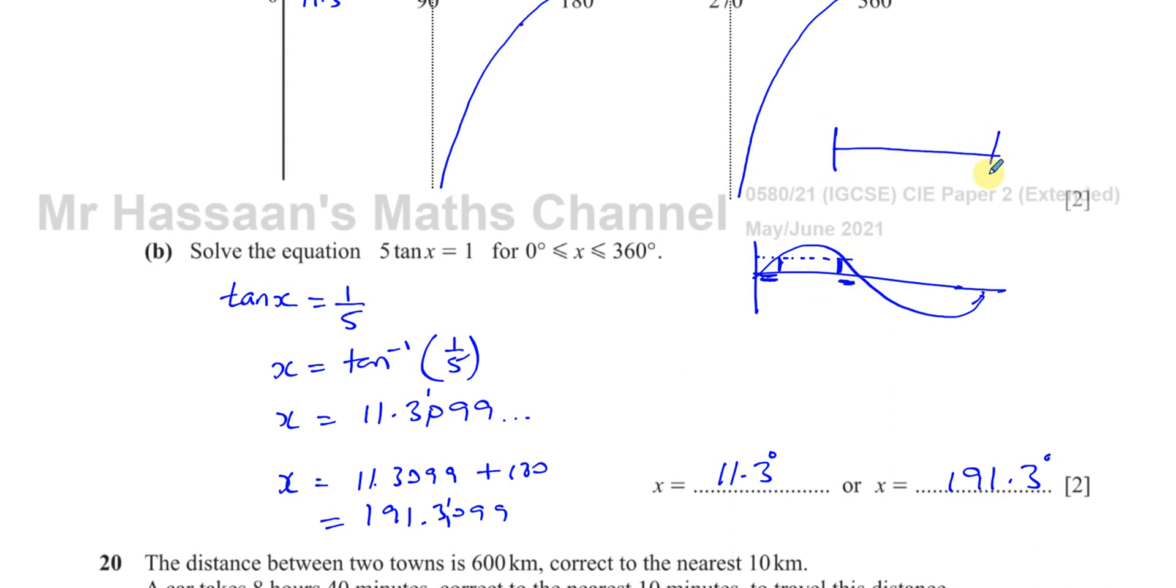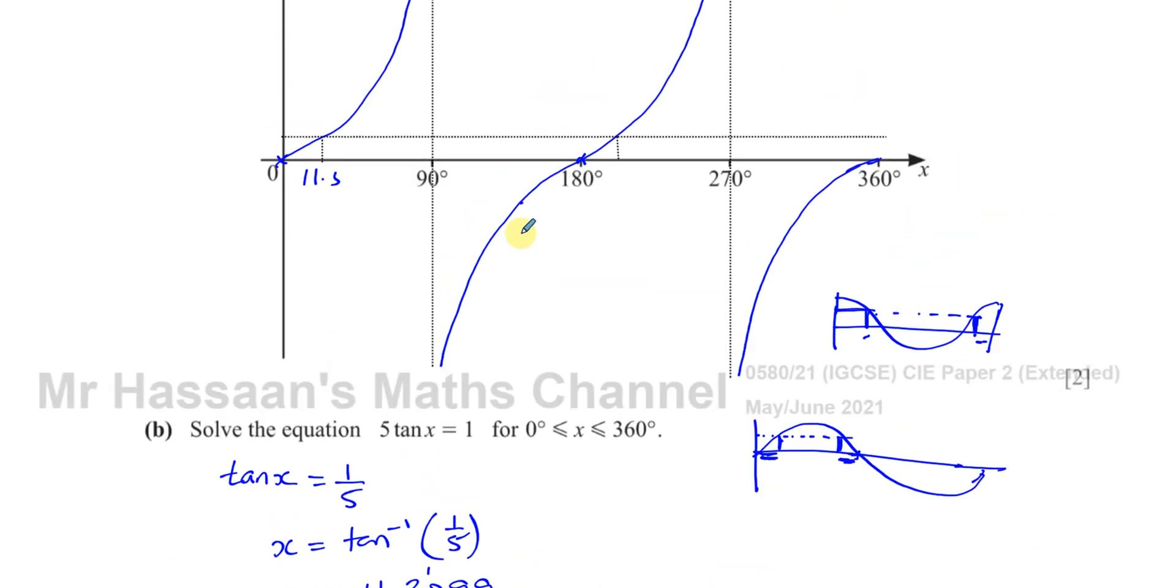But for the cosine curve, it looks something like this. And the principal angle will be, for example, here. And the other angle is all the way on this side. And in this case, this angle is 360 minus this angle. So for sine, it's 180 minus the angle. You get the angle that the calculator gives and 180 minus the angle. For the cosine curve, you get the angle that the calculator gives and then 360 minus the angle. And that's how you find the principal angles. And the other main angle for sine and cosine. For tangent, it's just simply the angle you find and add 180 to that.